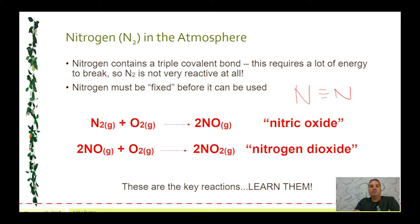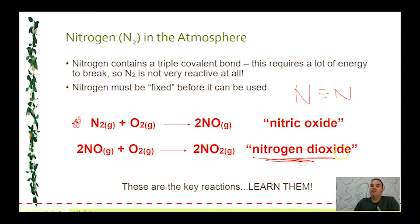When you have nitrogen and supply enough energy, the first reaction is where nitrogen reacts with oxygen to form nitric oxide, or nitrogen monoxide. Once converted into an oxide of nitrogen, it becomes far more reactive and can combine with more oxygen to form nitrogen dioxide. Nitrogen dioxide is quite a unique gas in that it is brown, and that's important when talking about photochemical smog because that's one of the clear indications it's occurring — you see a brown haze.